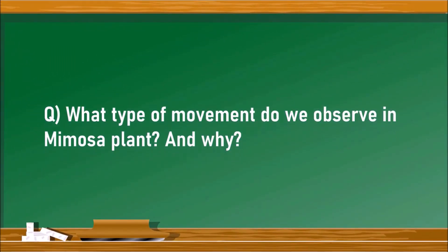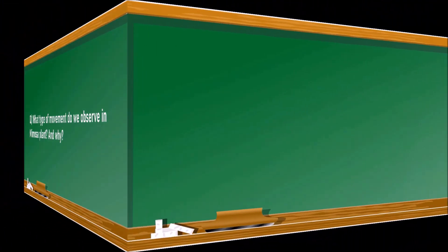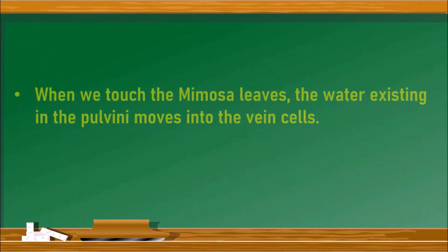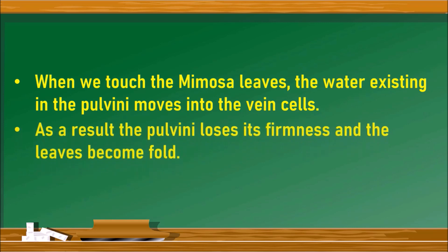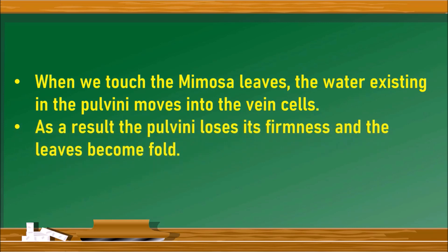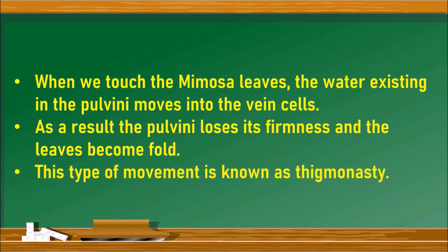What type of movement do we observe in the mimosa plant and why? When we touch the mimosa leaves, the water existing in the pulvinae moves into the vein cells. As a result, the pulvinae loses its firmness and the leaves become folded. This type of movement is known as thigmonasty.